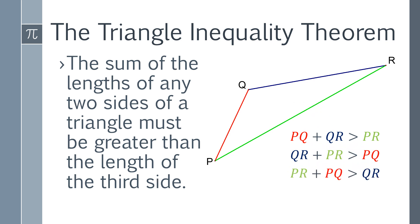So the Triangle Inequality Theorem says this: the sum of the lengths of any two sides of a triangle must be greater than the length of the third side. You'll see here we've got segment PQ in red, segment QR in blue, and segment PR in green. So no matter what two sides you have, they must add up to more than the third side.